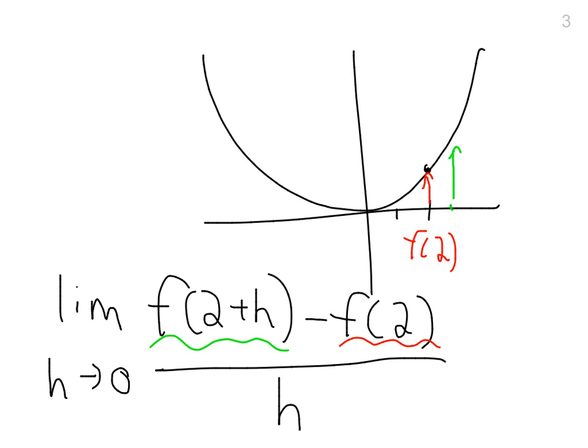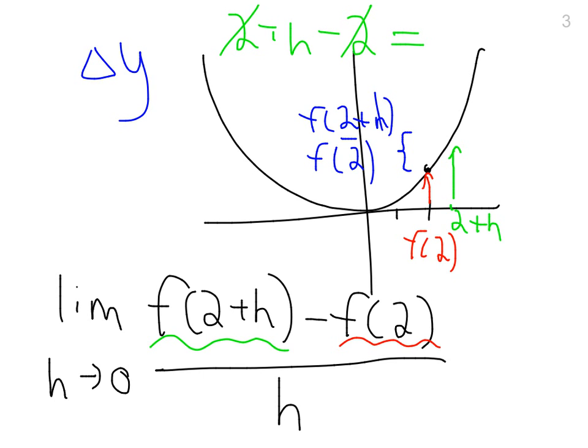This is our delta y right here. That's f of 2 plus h, sorry that's supposed to be an h, minus f of 2. That would give us our delta y. And now our delta x is, this point is, remember, 2 plus h, and this point was 2. So 2 plus h minus 2 is equal to h. So this h is our delta x.